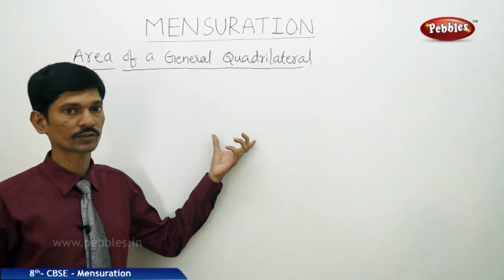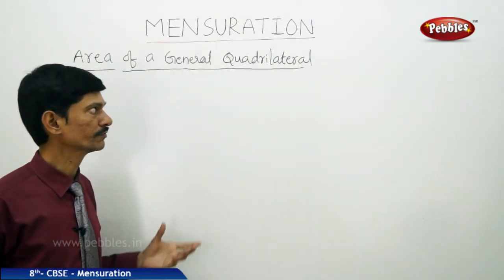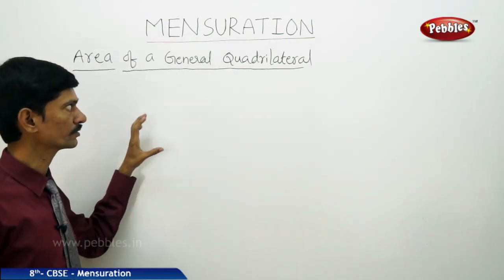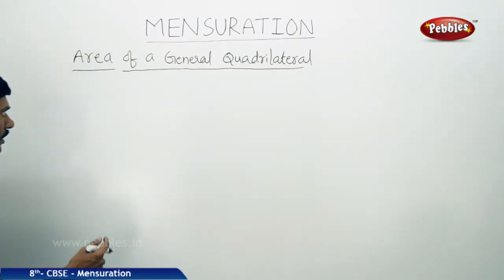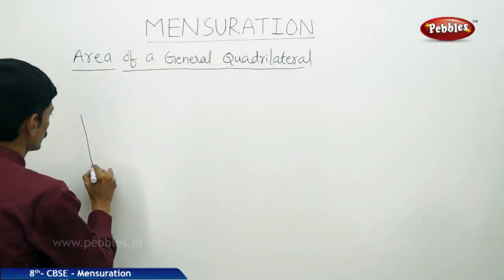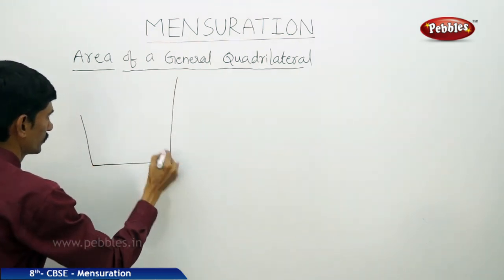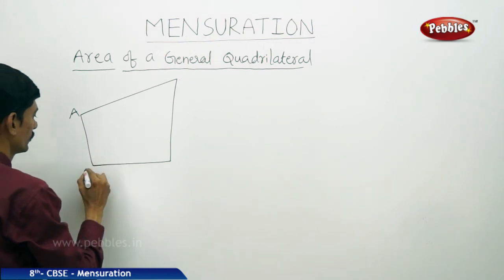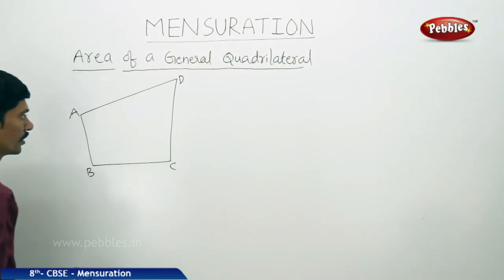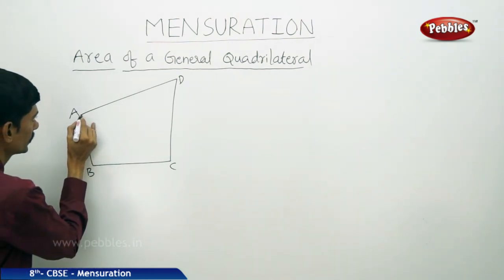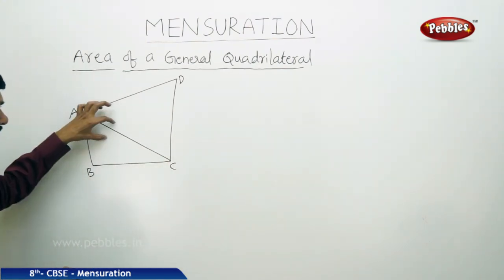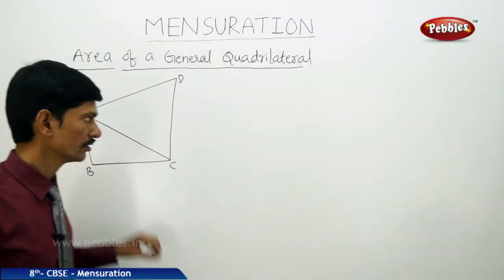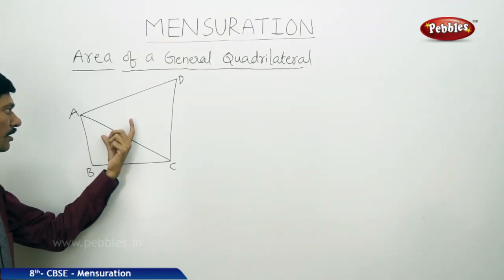If a field is in the shape of a quadrilateral, how do we find its area? So far there is no formula to find the area of a quadrilateral. Consider quadrilateral ABCD and draw diagonal AC. This diagonal divides the quadrilateral into two triangles. This triangulation method helps us to find the area of regular polygons.